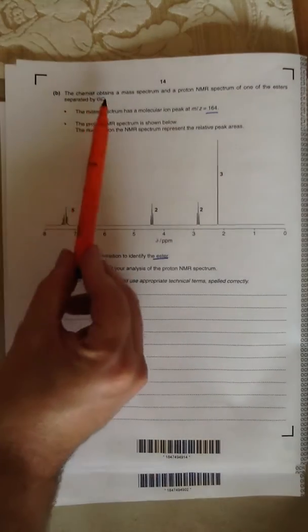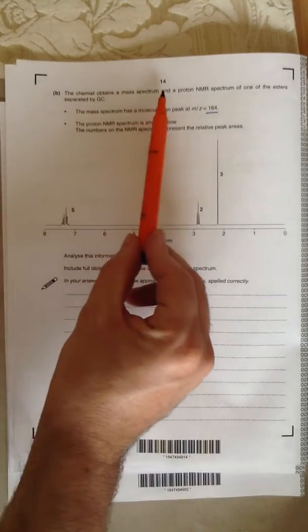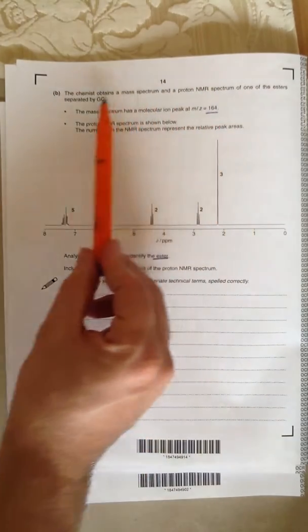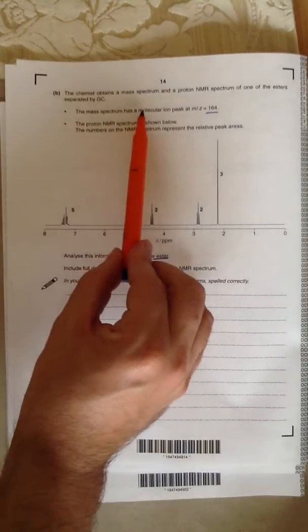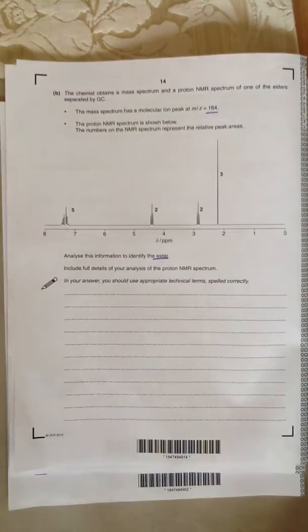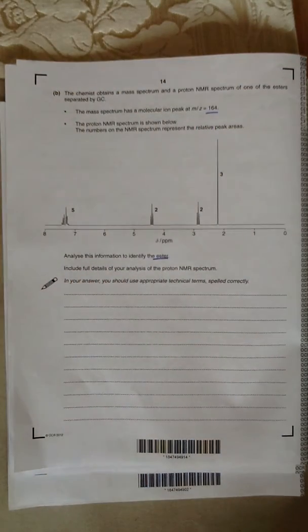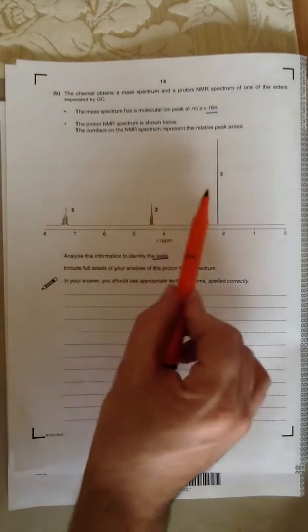The question starts by saying the chemist obtains a mass spectrum and a proton NMR of one of the esters separated by GC. The mass spectrum has a molecular mass of MZ of 164. That means its molecular mass is 164. And the proton NMR is shown below.